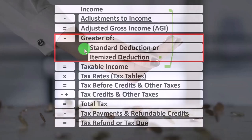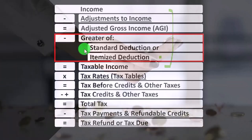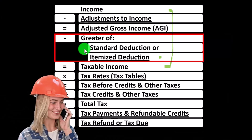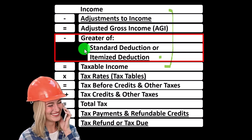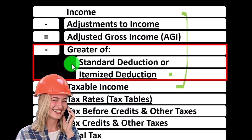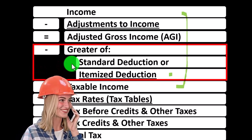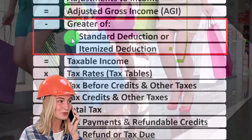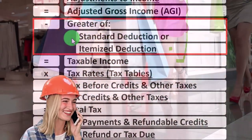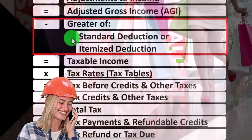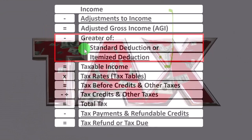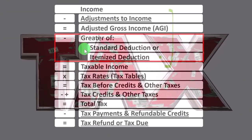In high cost-of-living states like California or New York, even an average home could push you over to itemizing. But in areas with lower cost of living, you might see situations where people purchase a home and still take the standard deduction, because it's fairly high and they're not taking on as large a loan or paying as much in property taxes.